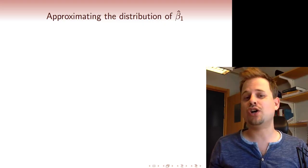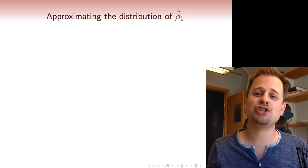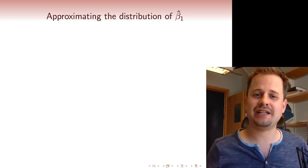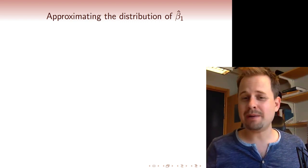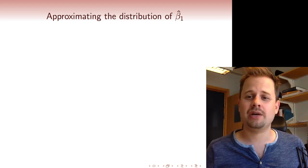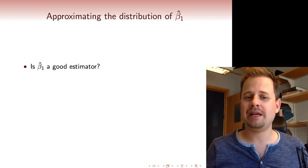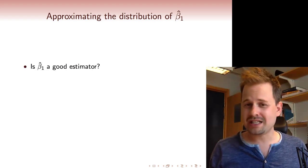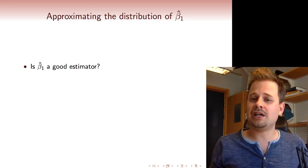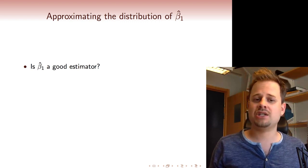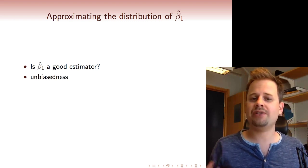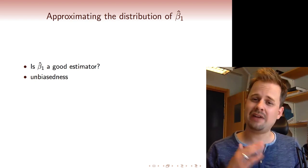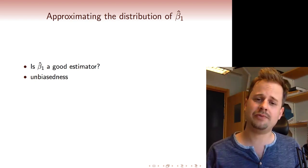In this video we're going to look at approximating the distribution of beta 1 hat. Remember that we started out with the question whether beta 1 hat was a good estimator. We explored this a little bit and came up with at least partial answers. We figured out that beta 1 hat is unbiased, so on average we estimate the correct value.